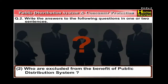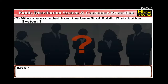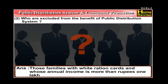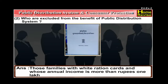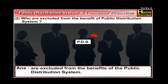Number 2: Who are excluded from the benefit of the public distribution system? The answer is: those families with white ration cards and whose annual income is more than Rs. 1 lakh are excluded from the benefits of the public distribution system.